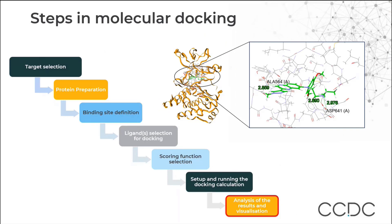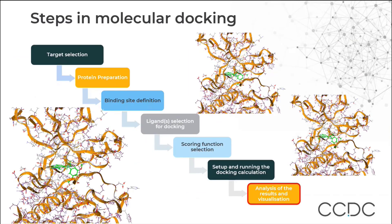Once the docking calculation is finished and completed, we will analyze the results. The analysis is in two forms — qualitative and quantitative. Qualitatively, we look at how the pose is, how the interaction is, where it is binding, and how the overlay compares with the reference. Quantitatively, we look at the scores as well as the RMSD to the bound ligand. These are the overall steps you will see today while setting up the docking calculation and performing analysis of results.